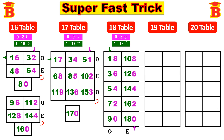Now this is the 18th table. So the table is: 18, 36, 54, 72, 90, 108, 126, 144, 162, and finally 180.